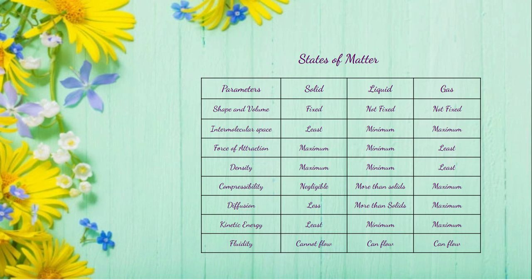Diffusion is less in solids. Liquids have more power of diffusion than solids, and gases have the maximum power of diffusion. Kinetic energy is minimum in solids, minimum in liquids, and maximum in gas. Fluidity: solids cannot flow. Liquids and gases can flow and are known as fluids.